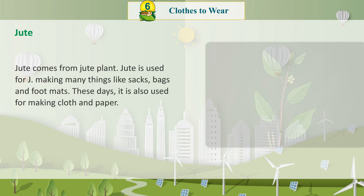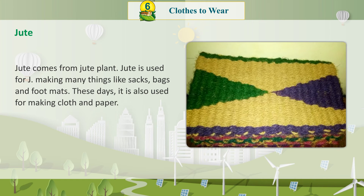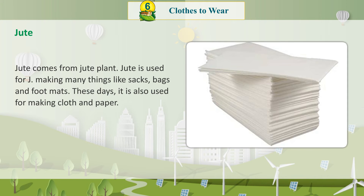Jute: Jute comes from the jute plant. Jute is used for making many things like sacks, bags and footmats. These days, it is also used for making cloth and paper.